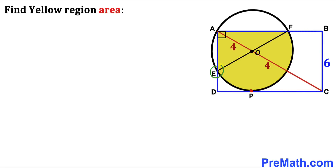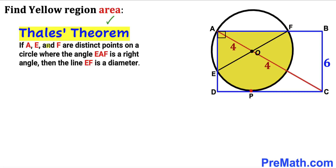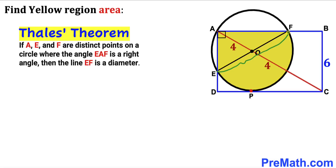I have connected point E with point F. Now let's recall the Thales theorem. According to this theorem, if A, E, and F are three distinct points on the circle where angle EAF is a right angle, then the line EF is going to be a diameter. As we can see, E, A, and F are on the circle and angle EAF is 90 degrees, so EF is the diameter of this circle and it passes through center O.